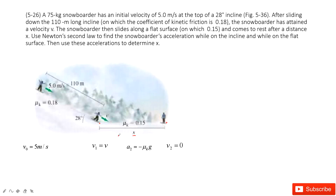If this person moves on the horizontal ground, the acceleration is due to friction. This friction is μk times the normal force. The normal force is mg. So the acceleration is negative μk·mg — negative because friction opposes the motion. So the acceleration is negative μk·g. You know the final velocity, the initial velocity v1, and the acceleration, so you can use the kinematic equation to find Δx2.